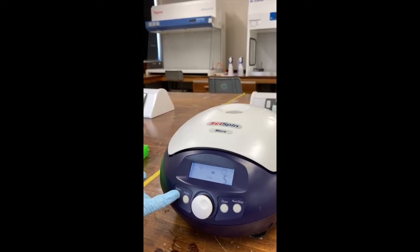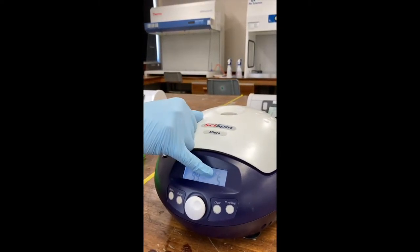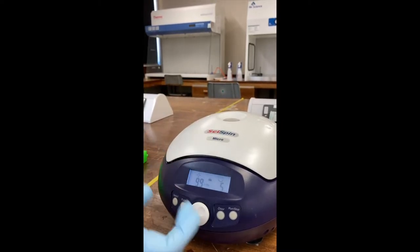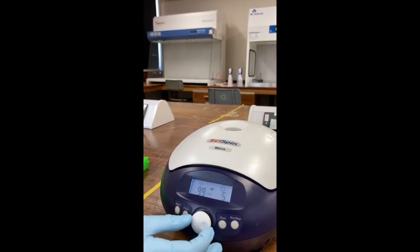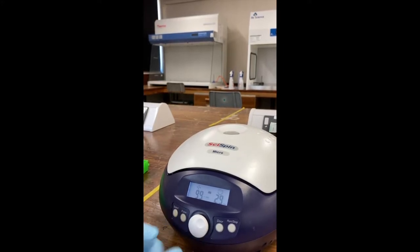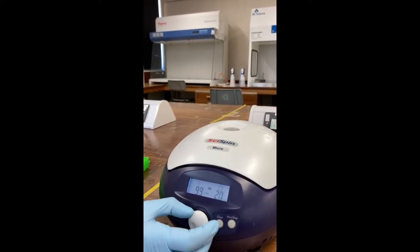The next thing you can change is the time in minutes. So we'll set it to 10 for an example. You use the dial there to just change the setting that you want.